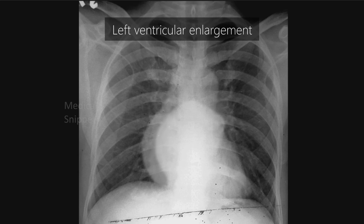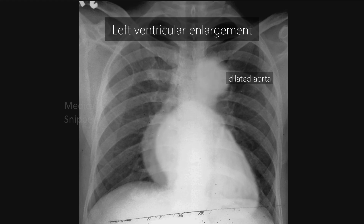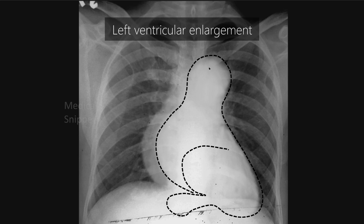In left ventricular enlargement, the cardiac apex is pushed downwards and leftwards, and there is also rounding of the cardiac apex. It is usually associated with a dilated aorta. The combination of left ventricular enlargement and the dilated aorta looks like the fictional character Schmoo, so it is also called the Schmoo sign.